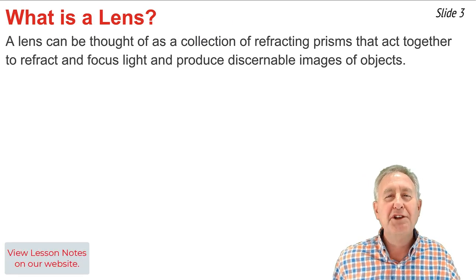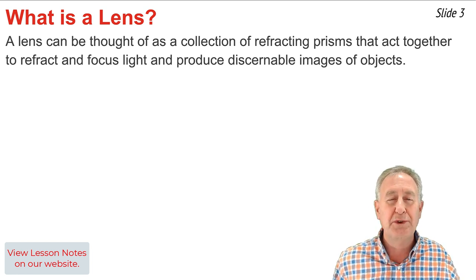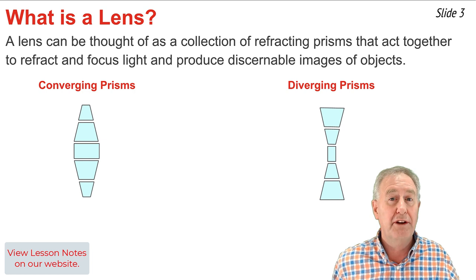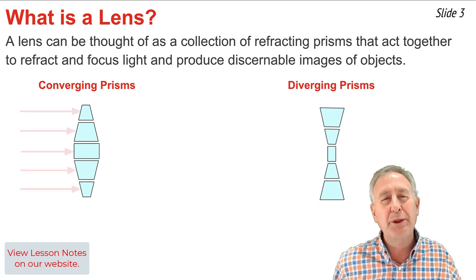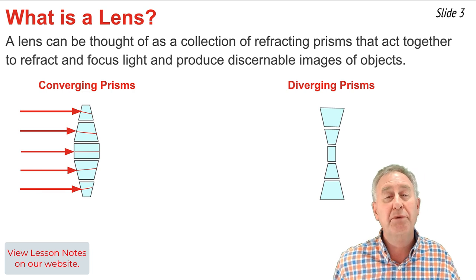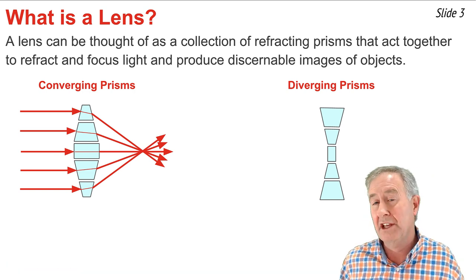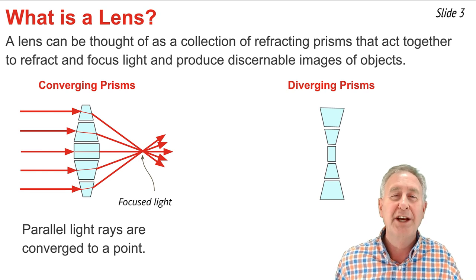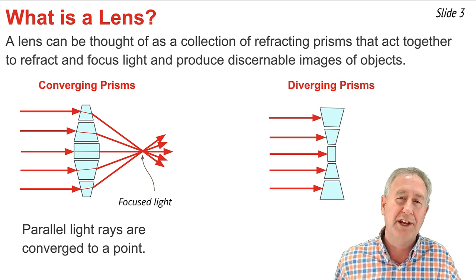You can think of a lens as being a collection of tiny refracting prisms that act together to refract and focus light so as to produce discernible images of objects viewed through the lens. Here we see on the left a collection of refracting prisms put together in such a manner as to form the shape of a converging lens. When parallel incident rays from a distant source approach this collection of prisms, we would observe the light refracting as they enter the prism and refracting again as it exits, and the net effect is to converge the light or to focus it to a point. Converging lenses are referred to as converging lenses because they converge parallel incident rays to a point.